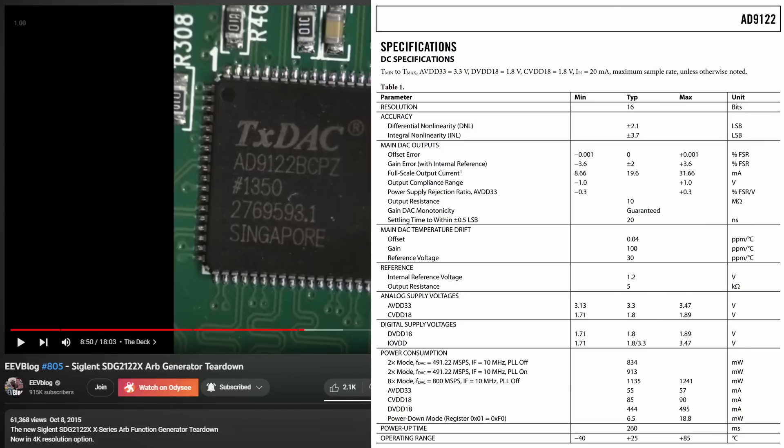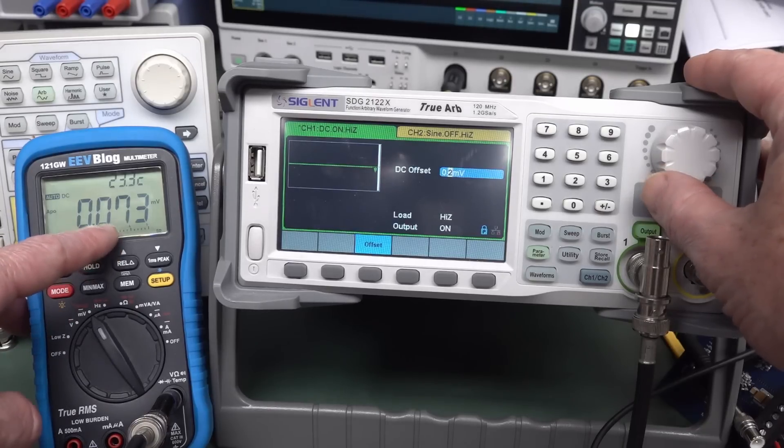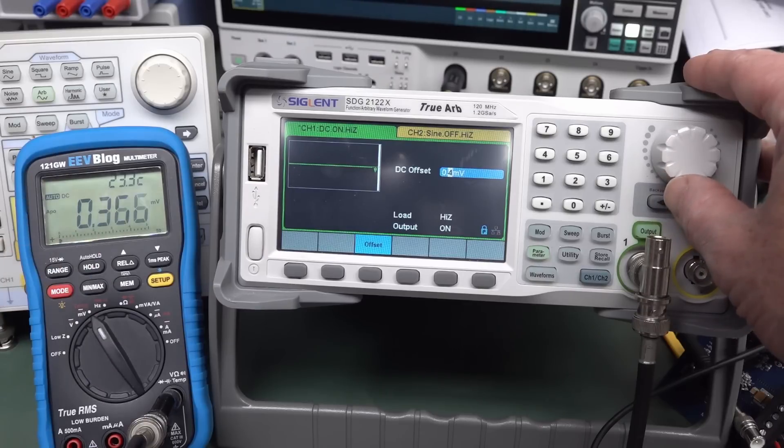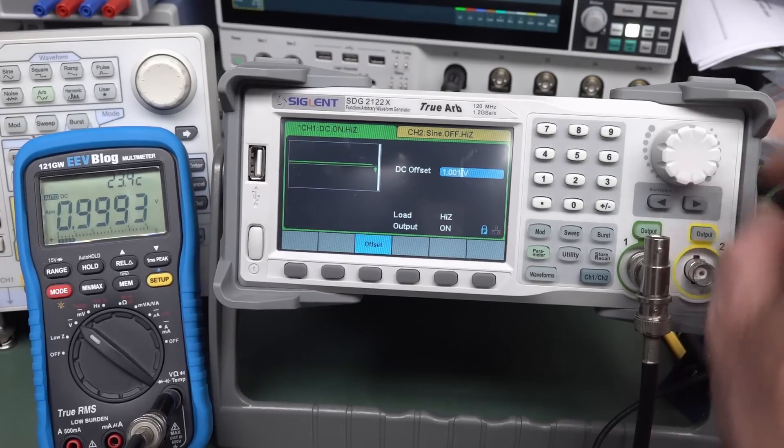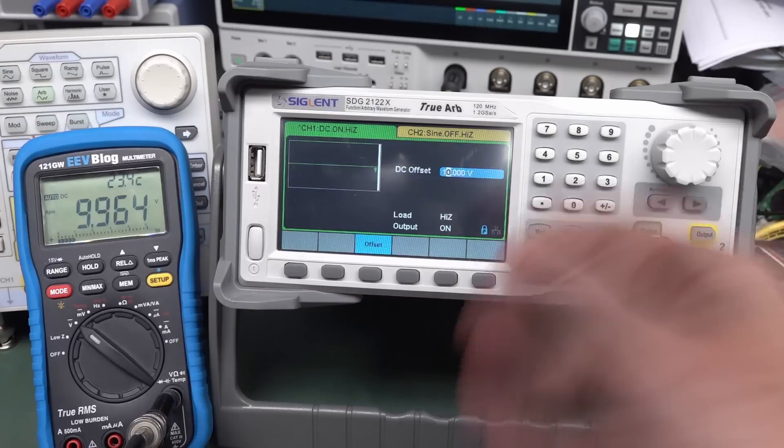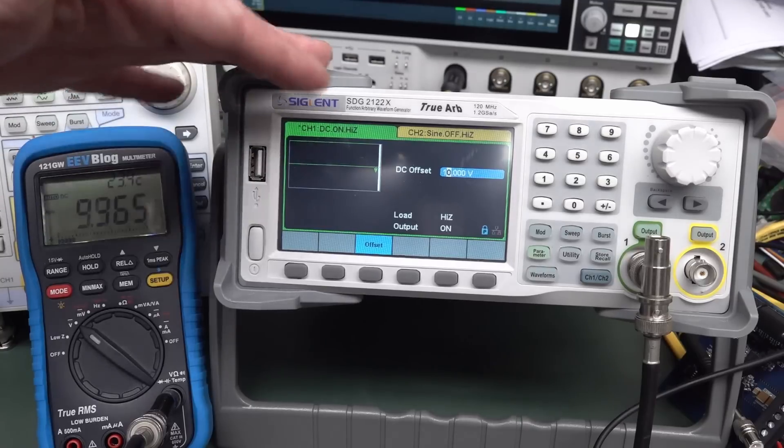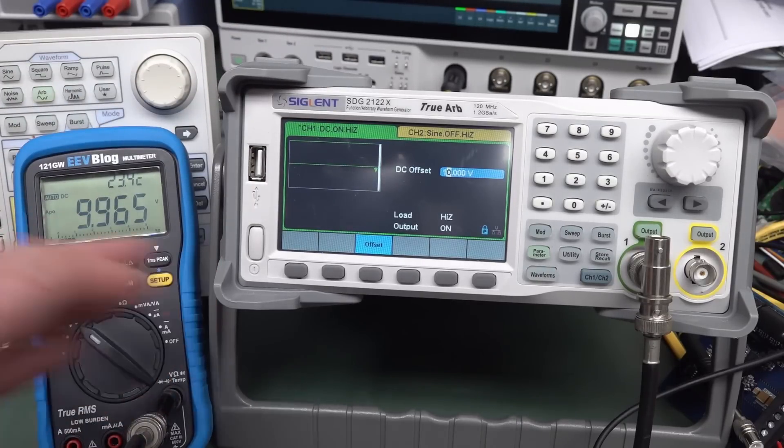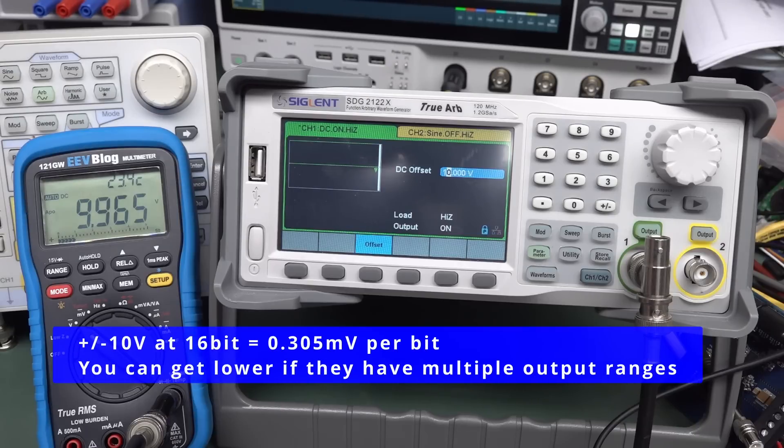I'll link in the teardown video for this. I can't remember what one it is, but I'll put it up in the overlay here. But you can see this thing looks pretty good. I can adjust at 0.1 millivolt steps. Now unfortunately, once you get to higher voltages like this, you won't be able to do often the 0.1 millivolt offset like that. But I can actually go up to plus minus 10 volts on this particular thing. So plus minus 10 volts with a 16-bit digital to analog converter, you get pretty decent DC resolution on these things. It's great.